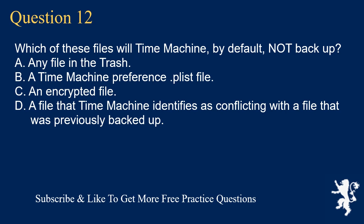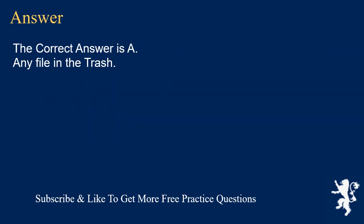Question 12. Which of these files will Time Machine, by default, not back up? A. Any file in the trash. B. A Time Machine preference PLIST file. C. An encrypted file. D. A file that Time Machine identifies as conflicting with a file that was previously backed up. The correct answer is A: Any file in the trash.